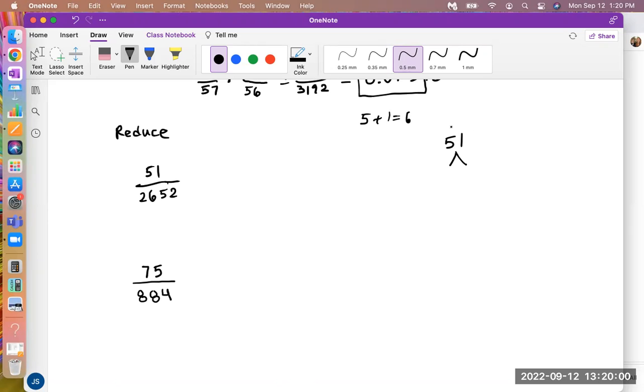So right away, I noticed that 51 is divisible by 3. I wouldn't have known that otherwise, but 51 divided by 3 is 17. So I know that 51 is 3 times 17.